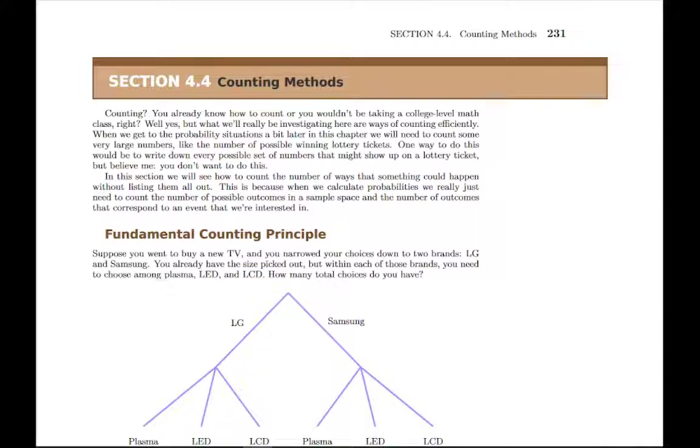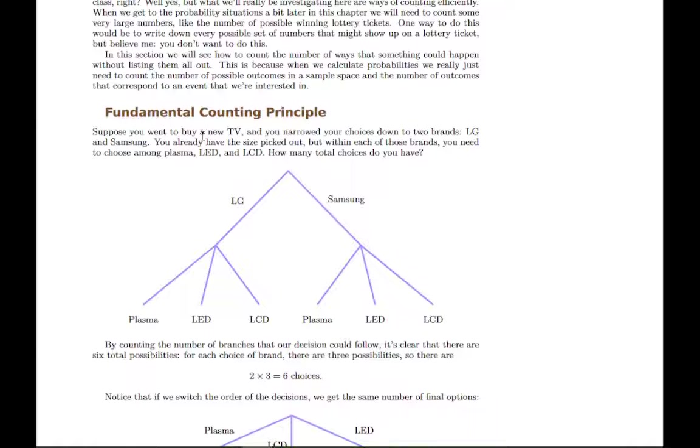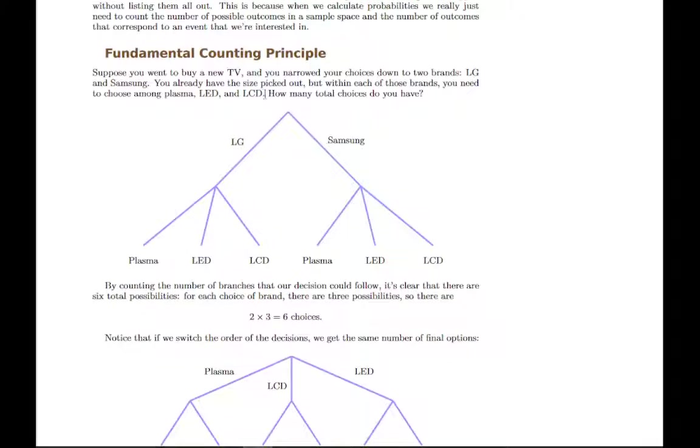There are three main topics in this section. The first one is this fundamental counting principle. And what the fundamental counting principle says is that if you're making a set of choices, like in this example, you're picking the brand of TV you're going to buy and then the type of TV, if you know how many choices you have or how many options you have for each decision, then you can figure out how many total possibilities there are.